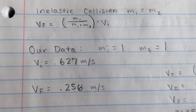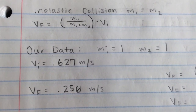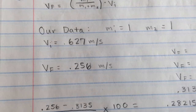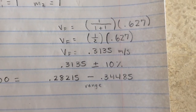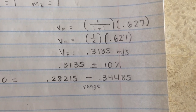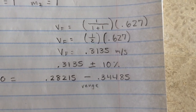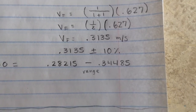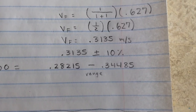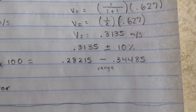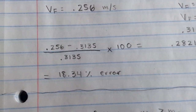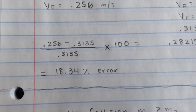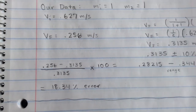Now here's our data. For both of our masses we used 1 because they are equal, our velocity initial was 0.627 meters per second, and our velocity final was 0.256 meters per second. When you plug that into the equation, multiplying 0.627 by one-half gives 0.3135. With a 10% error, the range we should have is 0.28215 through 0.34485. We weren't so lucky — our percent error came out to 18.34%, which isn't particularly good. However, that was what we found with our trial of the inelastic collision.